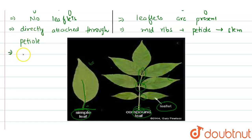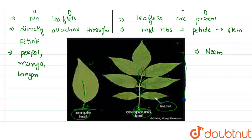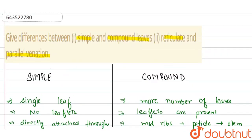Simple leaves are present in large trees like peepal, mango, and banyan tree, whereas compound leaves are present in neem — we have seen that in case of neem there is a cluster of leaves present in this way.